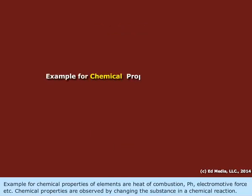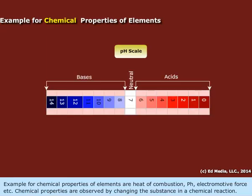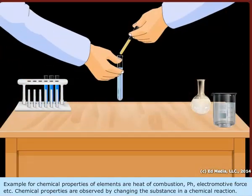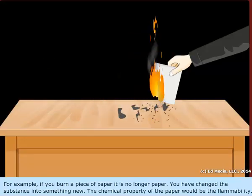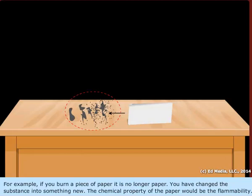Example for chemical properties of elements are heat of combustion, pH, electromotive force, etc. Chemical properties are observed by changing the substance in a chemical reaction. For example, if you burn a piece of paper, it is no longer paper. You have changed the substance into something new. The chemical property of the paper would be the flammability.